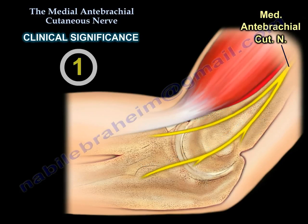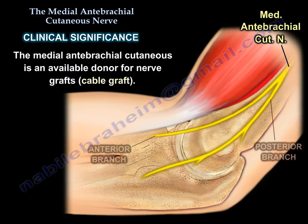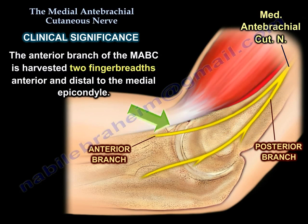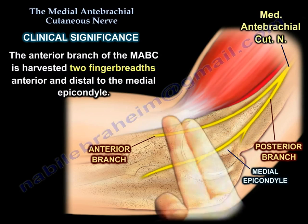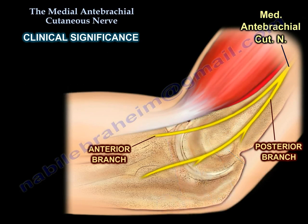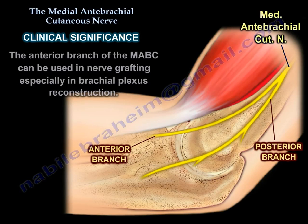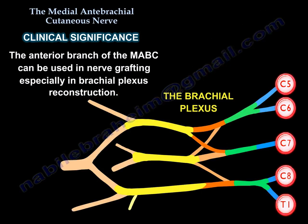Clinical Significance Number 1: The Medial Antibrachial Cutaneous Nerve is an available donor for nerve graft, cable graft. The anterior branch is harvested two finger breadths anterior and distal to the medial epicondyle, and it is used as a graft for repair of traumatic defects greater than 1 cm of the digital nerves. The anterior branch is also used in nerve grafting of the brachial plexus.